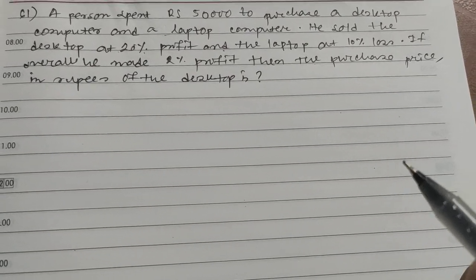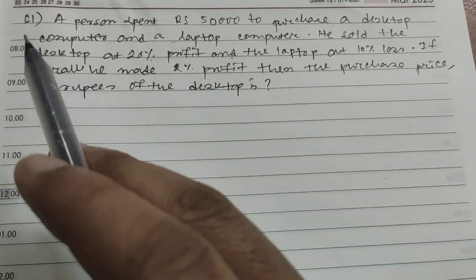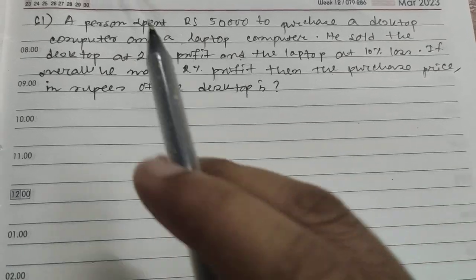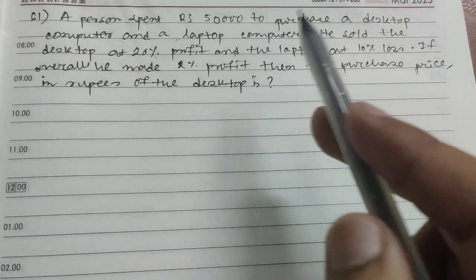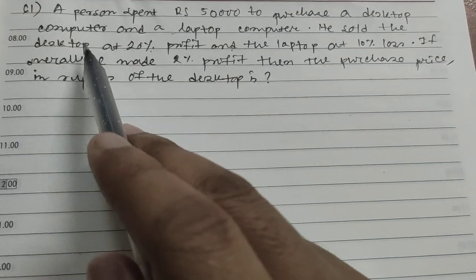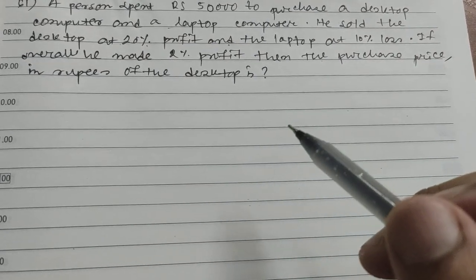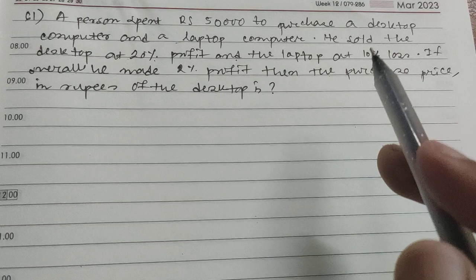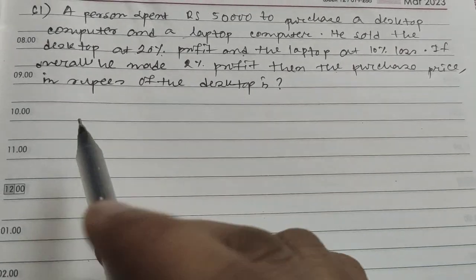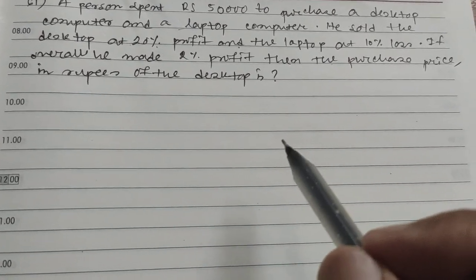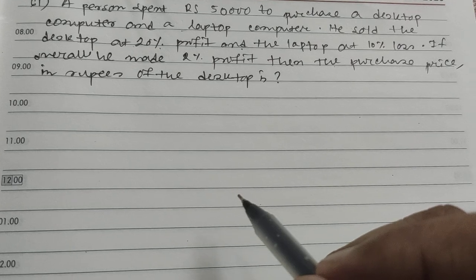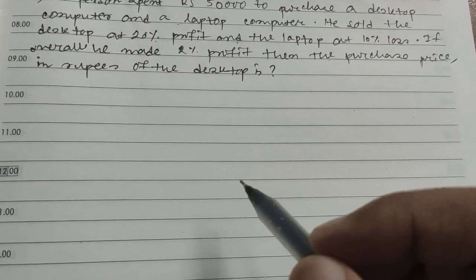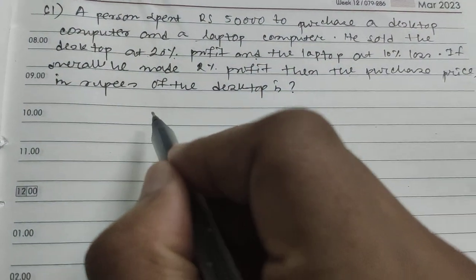This is question number 61. A person spent rupees 50,000 to purchase a desktop computer and a laptop computer. He sold the desktop at 20 percent profit and the laptop at 10 percent loss. If overall he made 2 percent profit, then the purchase price in rupees of the desktop is what we need to find. We will apply the allegation rule.